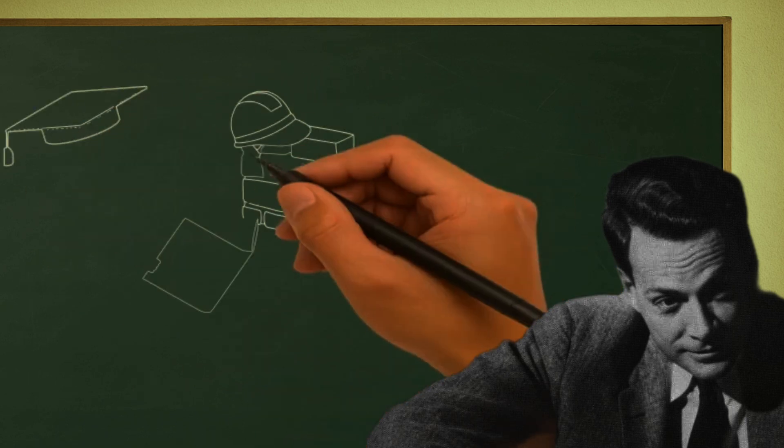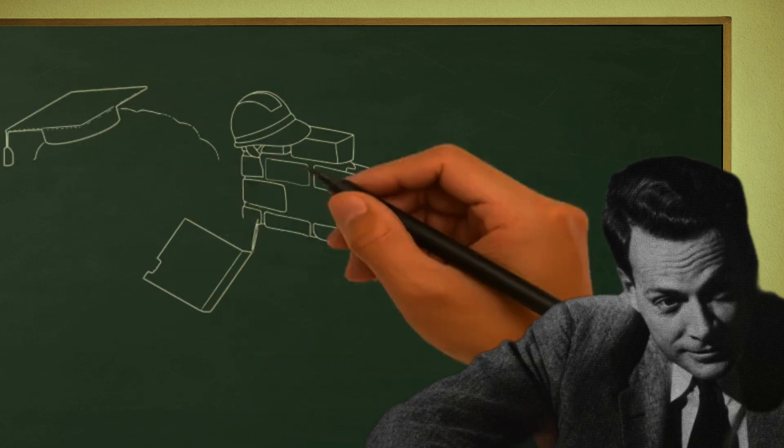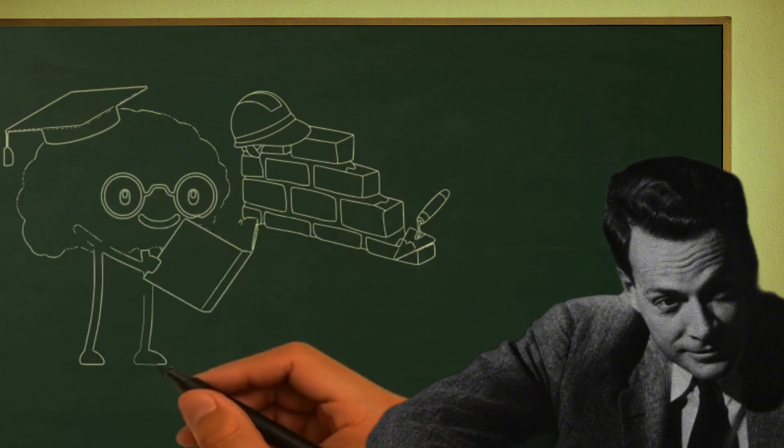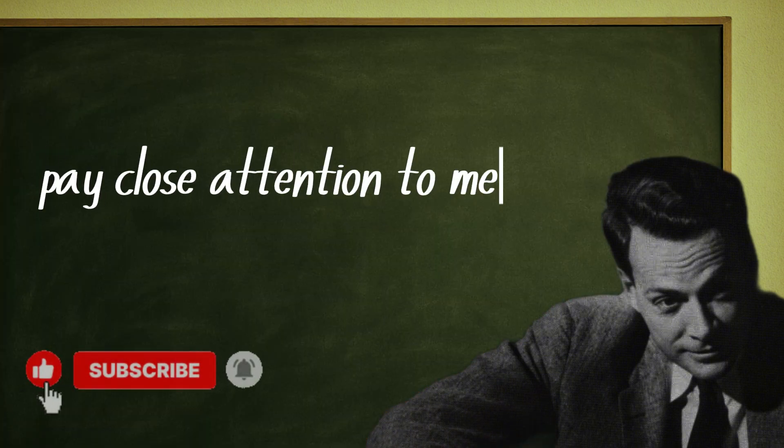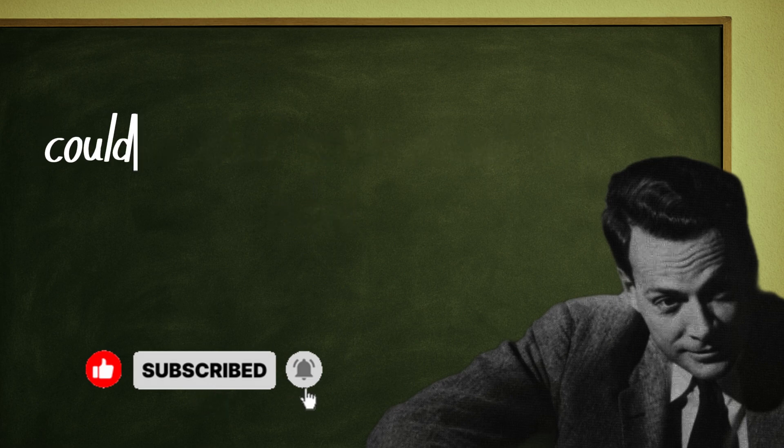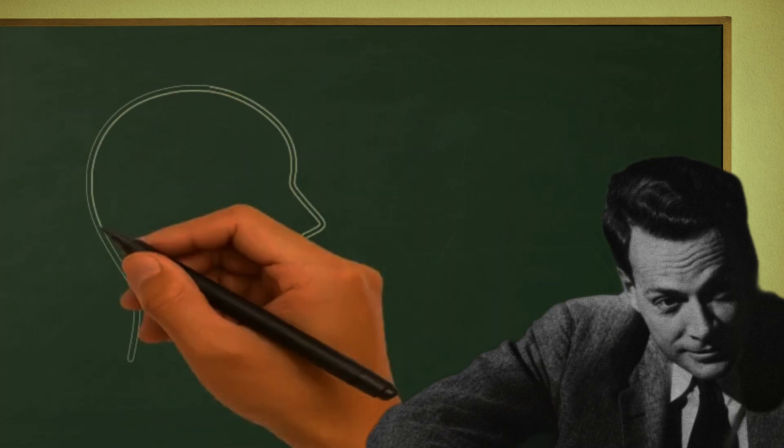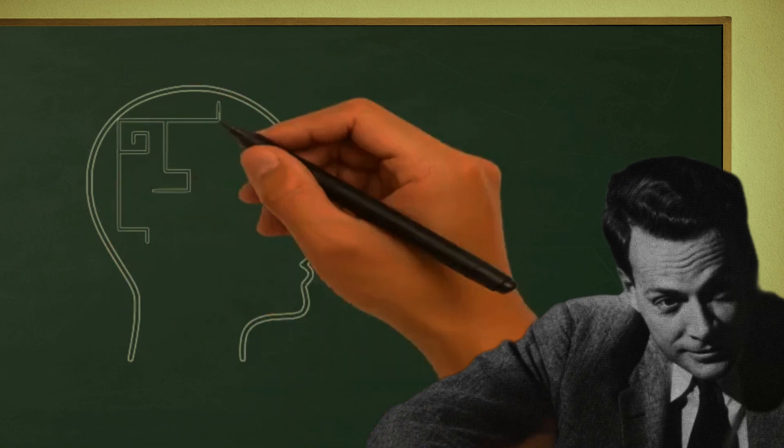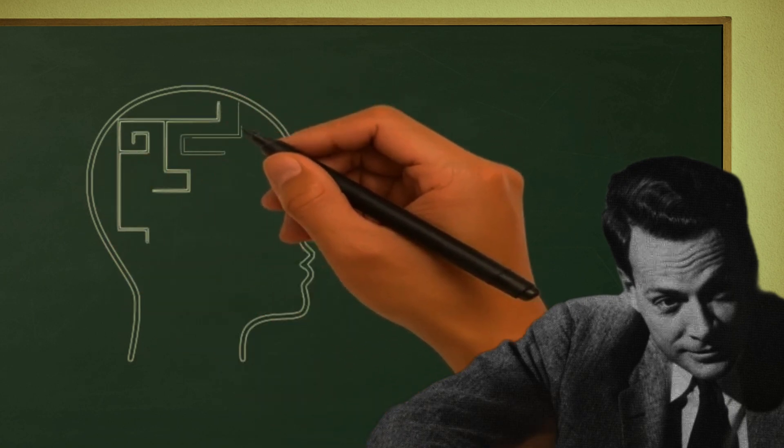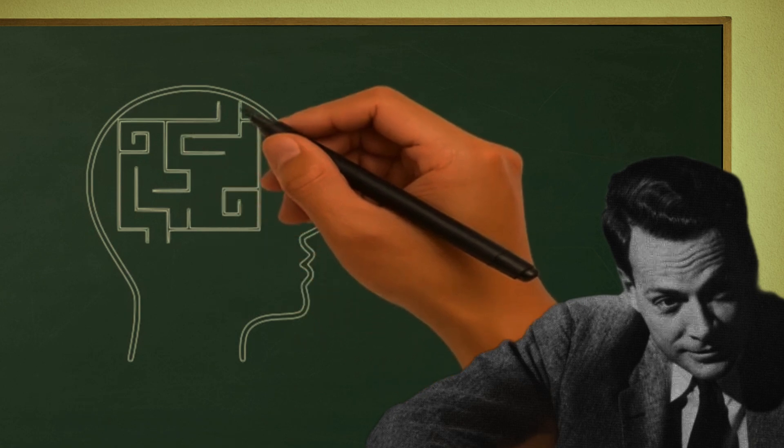What separates a genius from an ordinary person isn't the size of the brain, it's the quality of construction. Pay close attention because what you're about to hear could forever change the way you learn. The secret to training your mind like a genius isn't about stuffing it with information, it's about building knowledge with structure, purpose, and full awareness.